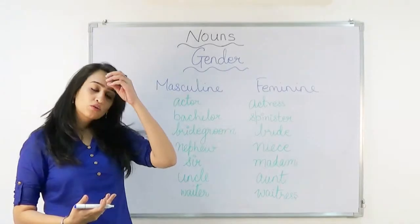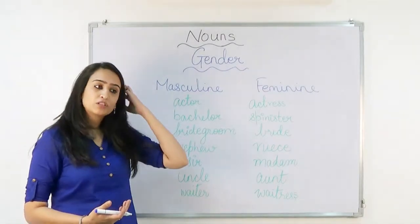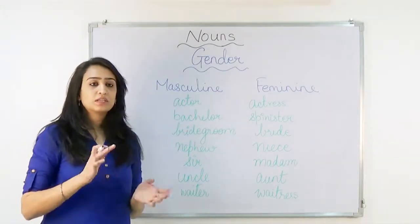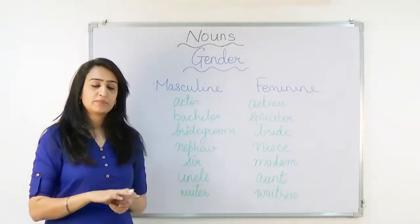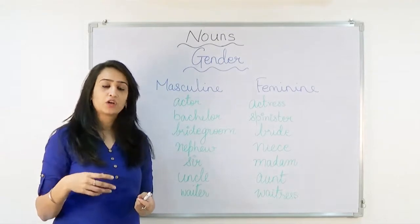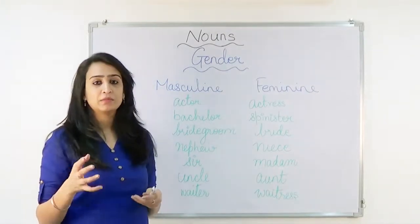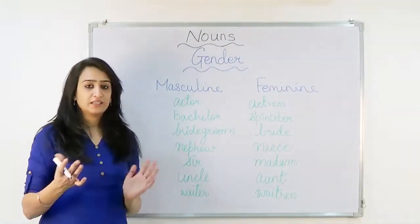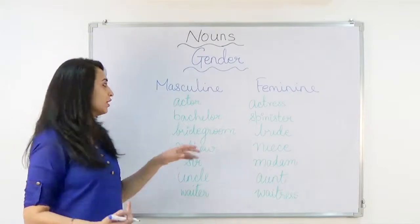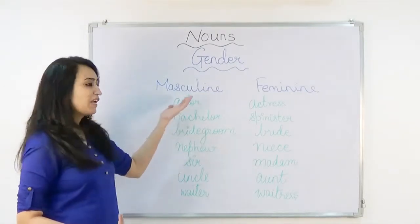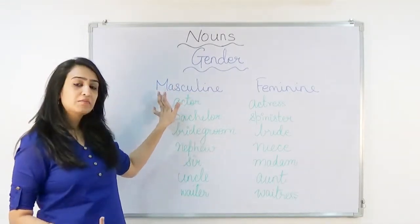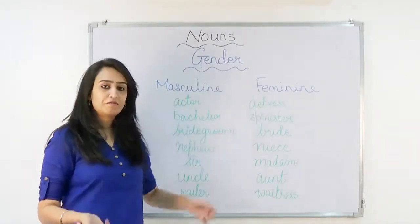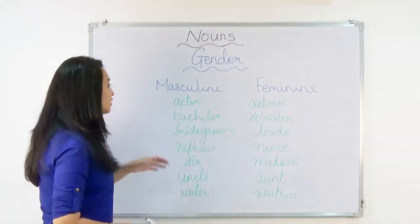Now we are going to learn about gender. Nouns change gender, especially when we are talking about animals and people. We have a masculine part and a feminine part of the noun.